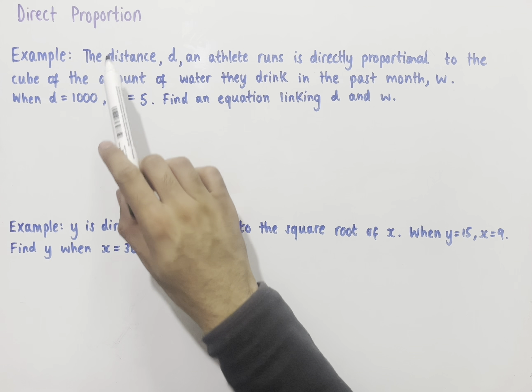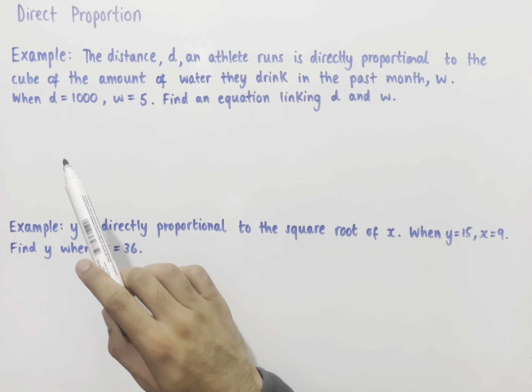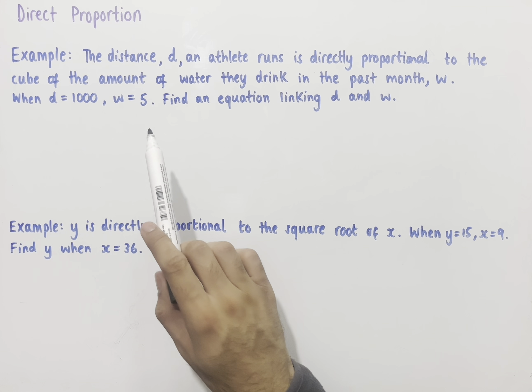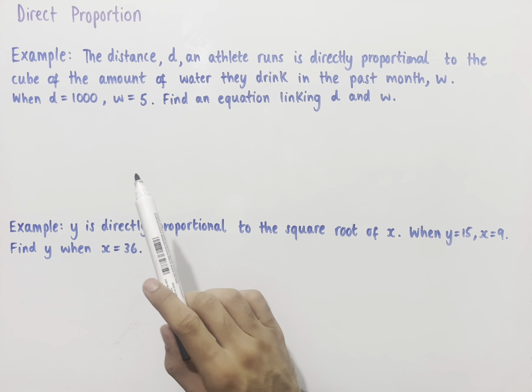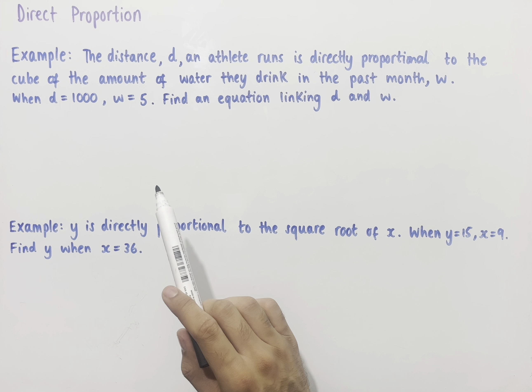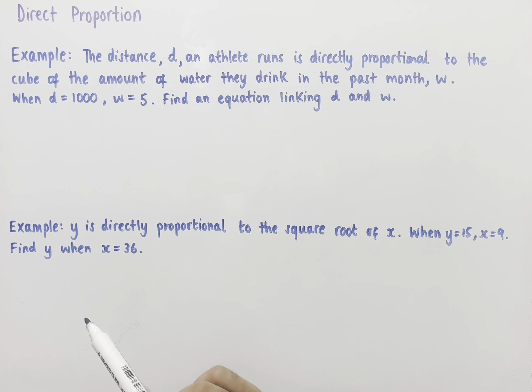Let's look at direct proportion. This is where we have two variables where, as one variable increases, the other also increases.